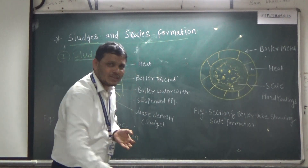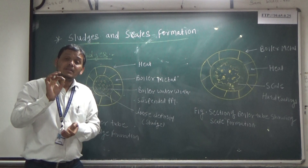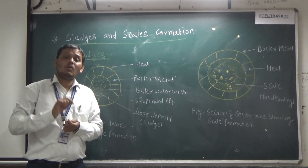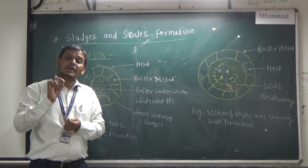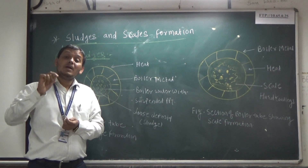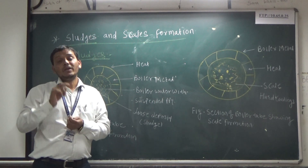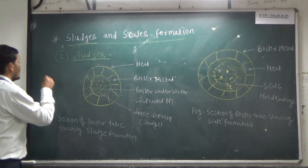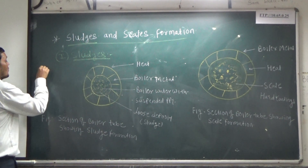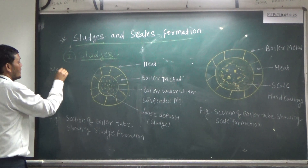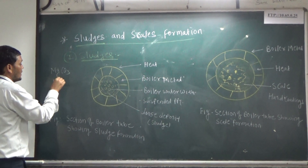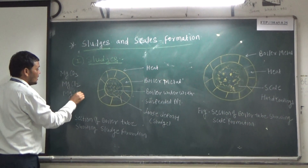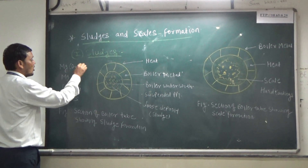What are the causes of sludge formation? Sludge formation can be caused if your hard water sample contains compounds having greater solubility in hot solution compared to cold solution. For example: magnesium carbonate (MgCO3), magnesium chloride (MgCl2), magnesium sulfate (MgSO4), and calcium carbonate (CaCO3). These are the responsible factors for sludge formation.